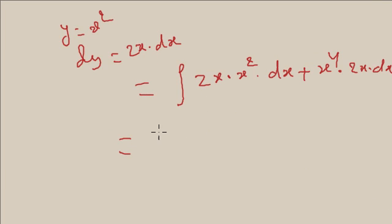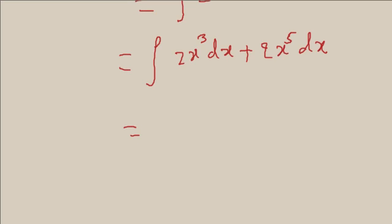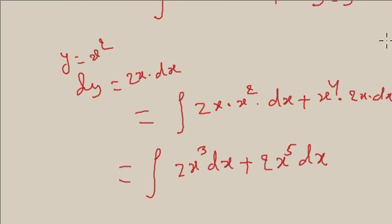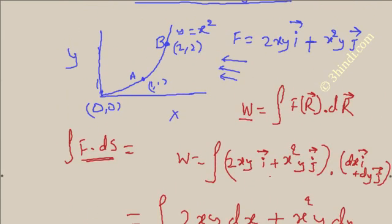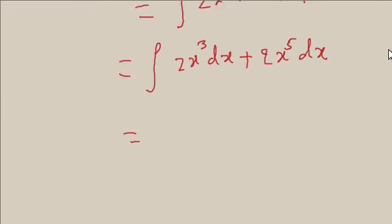This is equal to twice x cube dx plus twice x to the power 5 dx. Now you are required to find out the range of x. If you see the x, it varies from 2 to 1. So you are required to put here range 1 to 2.